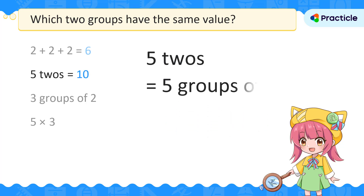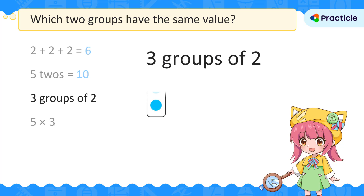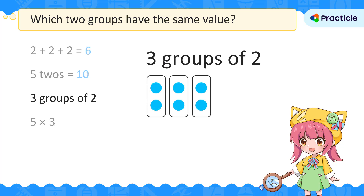Now let's move on to the next one where we have 3 groups of 2. What is 3 groups of 2 equal to? Well, this is the same as 2 plus 2 plus 2, or 3 times 2. We've seen this somewhere before, agree? This is the same as the first one.